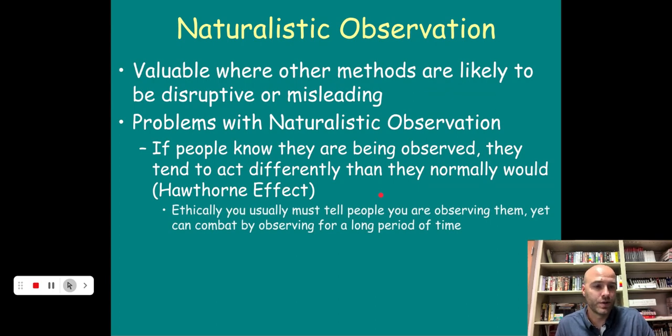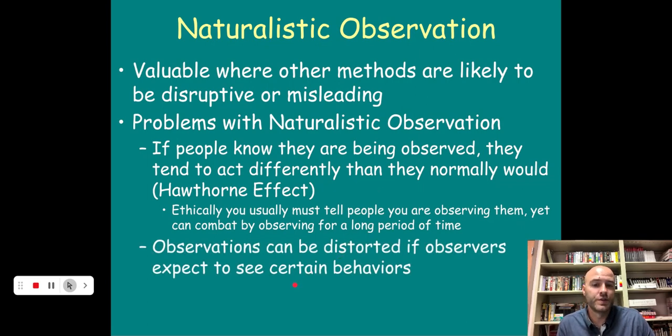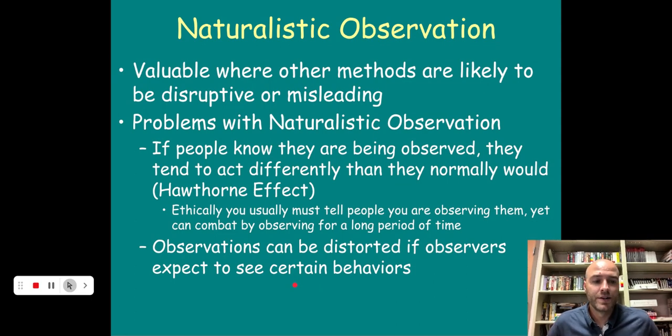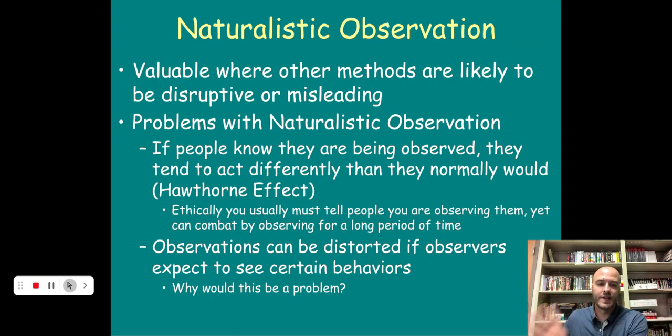Ethically speaking, you have to tell people you're observing them. So how do we combat the Hawthorne effect? You observe them for a long period of time. Think about reality television. They know they're being watched. They know there's cameras everywhere. But they're going to be in that house together for the next three months. Eventually, the feeling of being watched wears off and you start to behave like you normally would. And observations can be distorted if observers expect to see certain behaviors. This is what we call researcher bias. You have to be sure that as a scientist, as a psychologist, as a researcher, that you are taking all your biases and you're setting them aside. You're just going to observe and record what you see here.